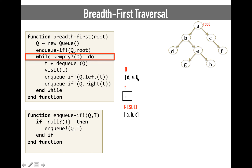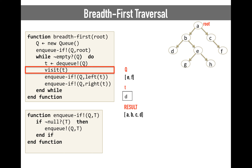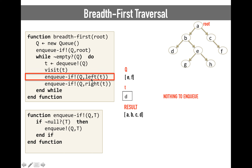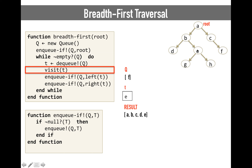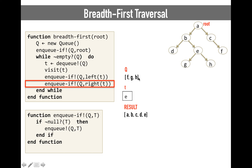We go back — still have elements in the queue — dequeue the next, which is D, visit D, and enqueue the children. But D has no children, so nothing is going to happen in the next two instructions, nothing to enqueue. We go back, still have elements to visit, so we dequeue the next, which is E. We visit it, and then we enqueue the children of E, preparing for the next level, which are G and H.